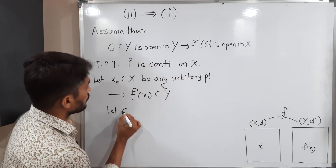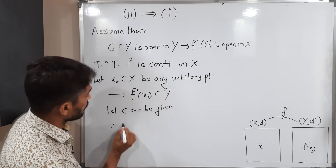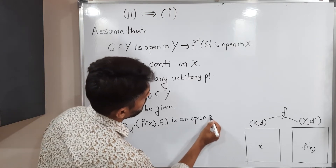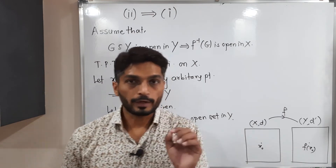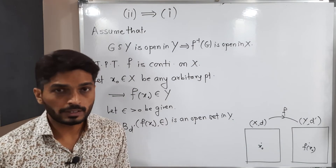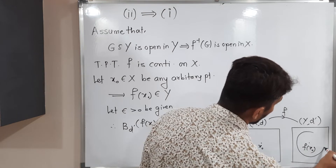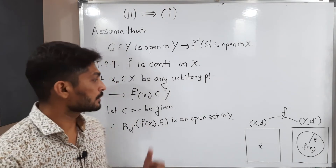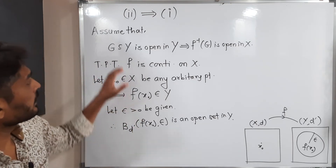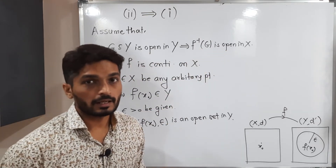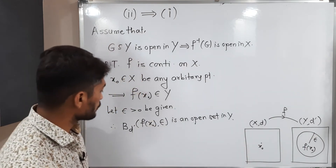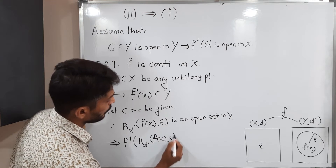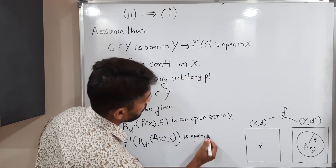Consider the open ball B(d'; f(x₀), ε) — this is an open set in Y, since every open ball is an open set. We have already assumed that if we have any open set in Y, its inverse image is an open set in X. So therefore f inverse of B(d'; f(x₀), ε) is open in X.